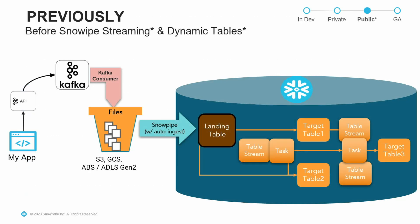In the past, when you wanted to do streaming with Snowflake, you'd connect to Kafka. Snowflake has had a Kafka connector for quite a while — it aggregates events into files that land inside your cloud storage. Then Snowpipe with auto-ingestion reads those files and ingests them into Snowflake. Once the data is there, you'd build streams and tasks to identify what records have been added to your landing table and process those to prepare your final tables for business users.